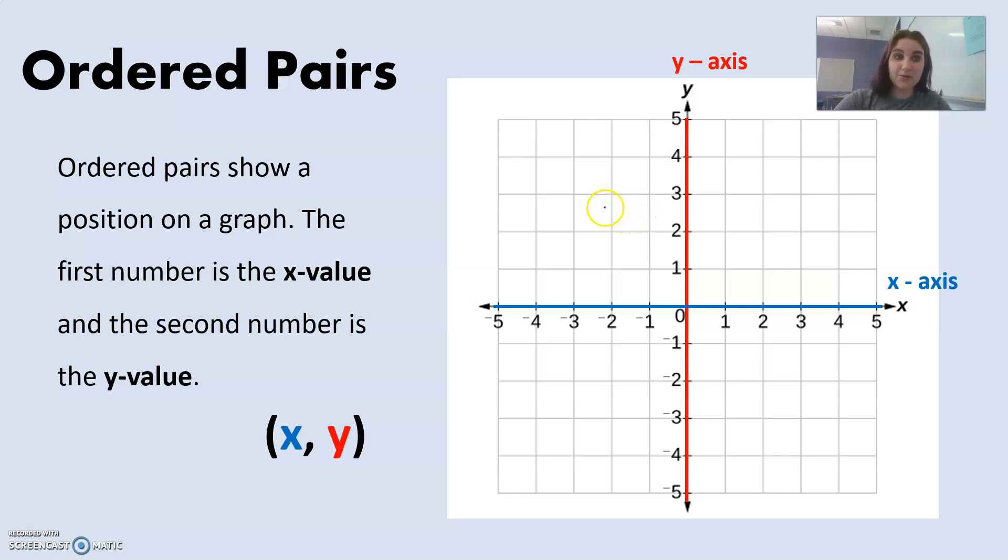Ordered pairs are a part of the coordinate plane, and they show a position on a graph. The first number is the x value, and the second number is the y value. Here is an example of an ordered pair, or how an ordered pair is written, x comma y.